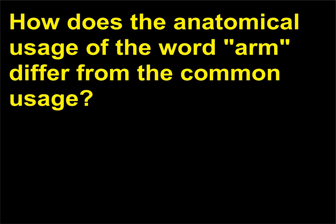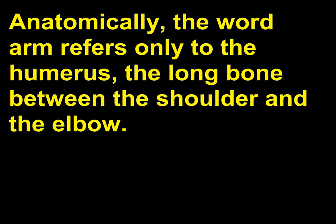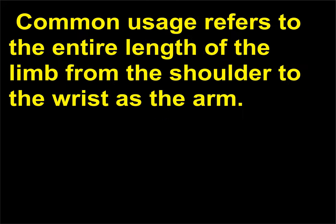How does the anatomical usage of the word arm differ from the common usage? Anatomically, the word arm refers only to the humerus, the long bone between the shoulder and the elbow. Common usage refers to the entire length of the limb from the shoulder to the wrist as the arm.